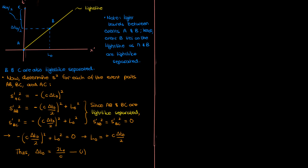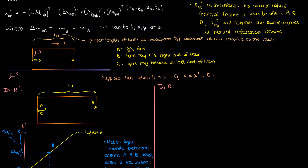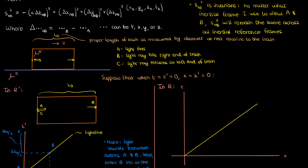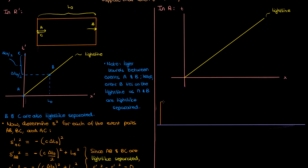So now we're done with reference frame R'. Let's look at things from the perspective of someone in reference frame R. We'll again draw events A, B, and C, but this time it'll be a bit more complicated. Let's draw our spacetime diagram with unprimed coordinates t and x. I've drawn the light line again. According to the observer in R, the train is lined up at x equals 0 at time equals 0 and the light ray starts to fire, so event A is again at the origin. After a certain time delta t1 in the R reference frame — and I haven't made delta t1 equal to delta t0 over 2, because we don't necessarily know they're the same.